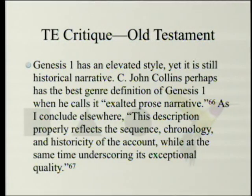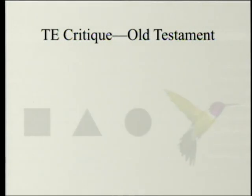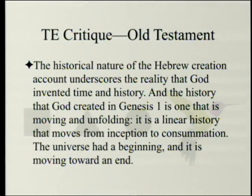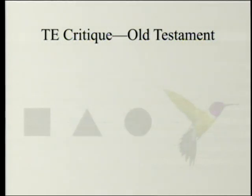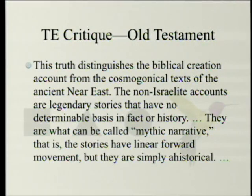Genesis 1 has an elevated style, yet it is still historical narrative. C. John Collins perhaps has the best genre definition of Genesis 1 when he calls it 'exalted prose narrative,' which properly reflects the sequence, chronology, and historicity of the account while underscoring its exceptional quality. The historical nature of the Hebrew creation account underscores that God invented time and history. The history created in Genesis 1 is linear, moving from inception to consummation — the universe had a beginning and is moving toward an end. This distinguishes the biblical creation account from the cosmogonic texts of the ancient Near East, which are legendary stories with no determinable basis in fact or history.